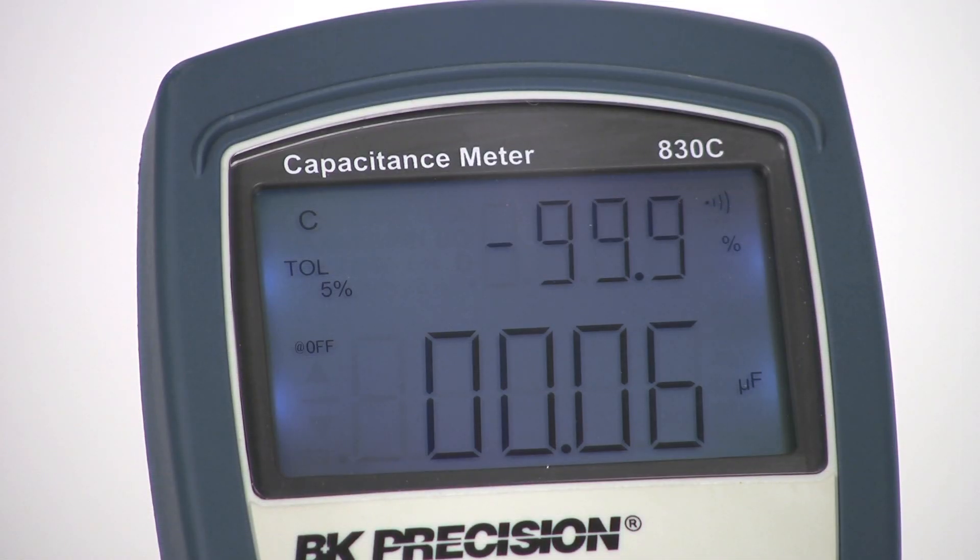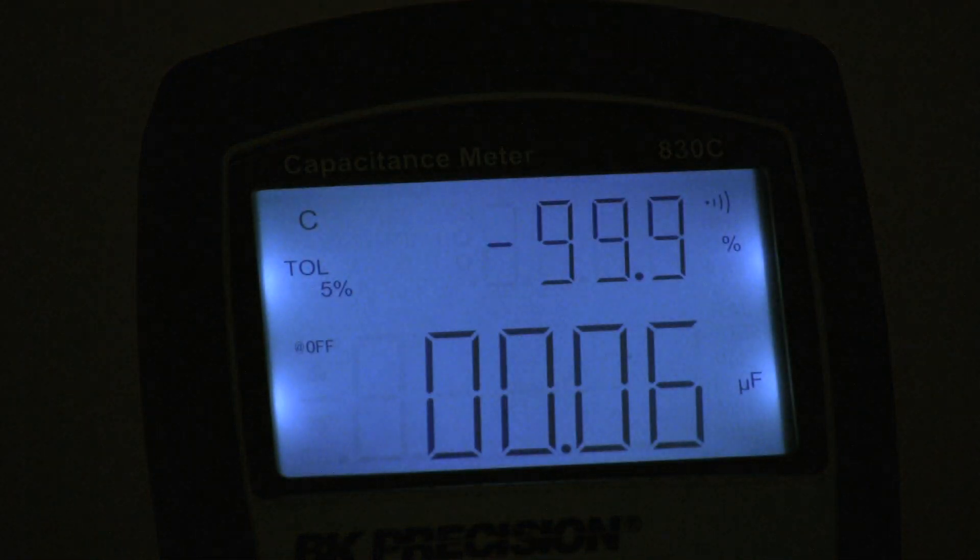Both meters feature large, easy-to-read primary and secondary displays with 11,000 and 10,000 counts respectively, as well as a bright, evenly-lit backlight.